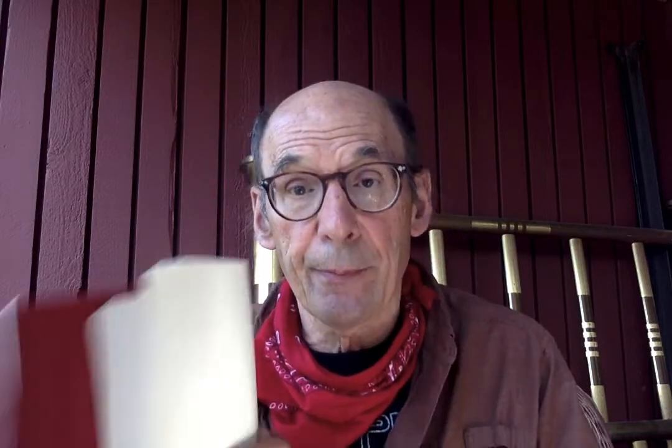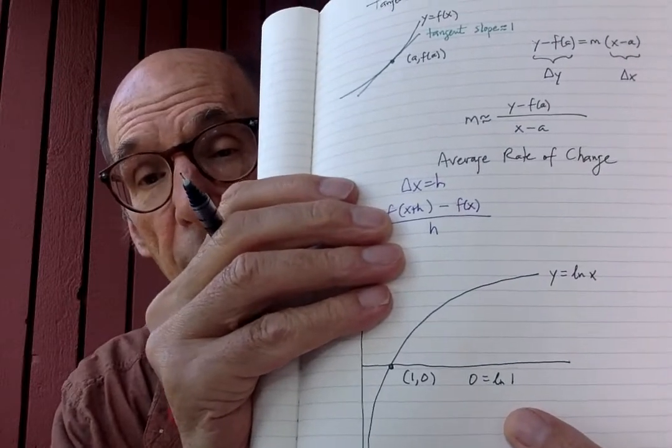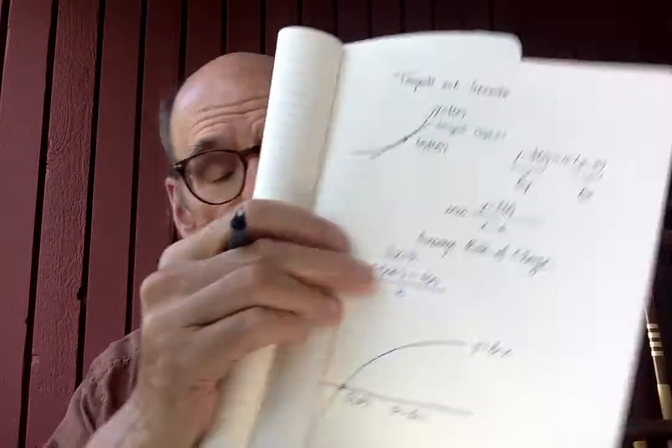Log base 10 of a million is 6, log base 10 of a billion is 9, log base 10 of 10 to the 20th is just 20 — it hardly grows at all. And we know one point on this: we're going to be in the situation we were just in. We know the point (1, 0) because 0 is the natural log of 1 — what's the exponent to get 1? You raise something to the 0 power.